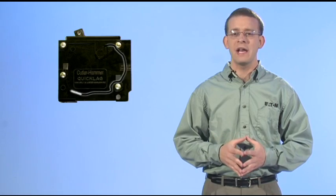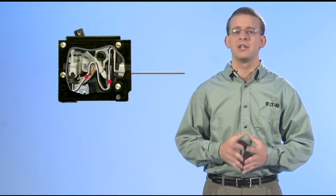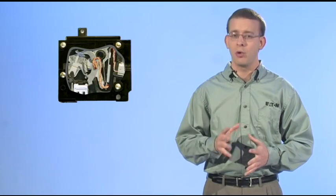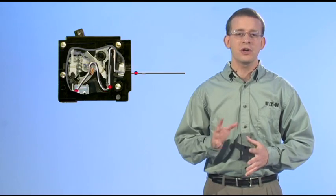It does this by way of an engineered bimetal that bends when current above its rating is applied across the circuit. It would only take a few seconds to trip the breaker if a high amount of excess current is being pulled through the circuit, but it could take several minutes if the current is just above the breaker's rating.